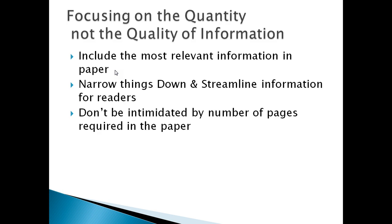The second thing is focusing on the quantity and not the quality of information. This is very common when people write their first research paper. They say, 'This paper is 25 pages so it's got to be good — there's tons of information in here.' But what they fail to realize is that the information they're using may not be good information. You want to analyze, narrow down, and streamline the information you're using to make things easy for your reader.